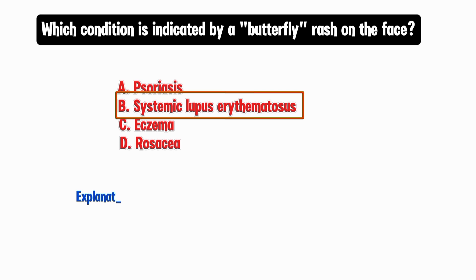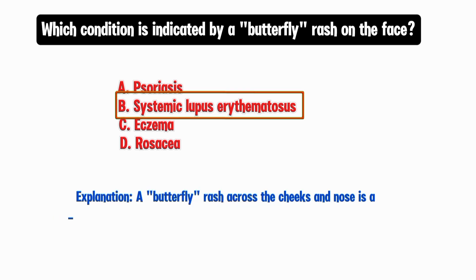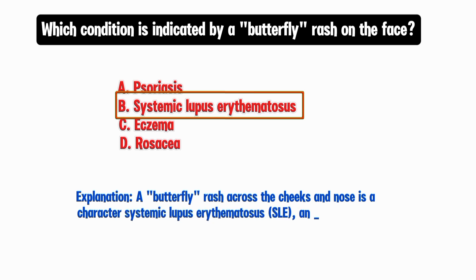Explanation. A butterfly rash across the cheeks and nose is a characteristic sign of systemic lupus erythematosus, or SLE, an autoimmune disease.